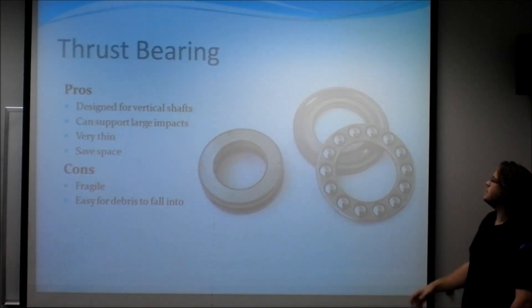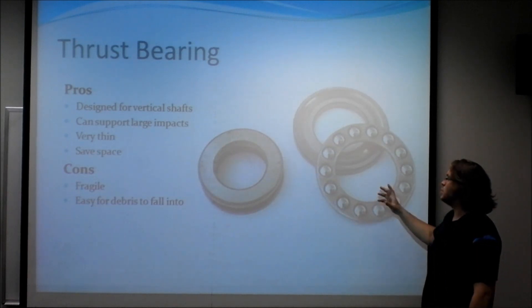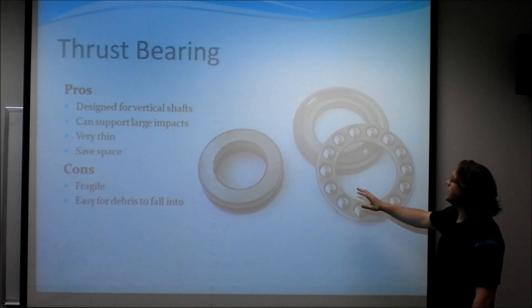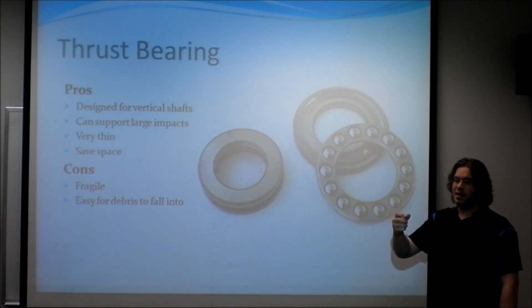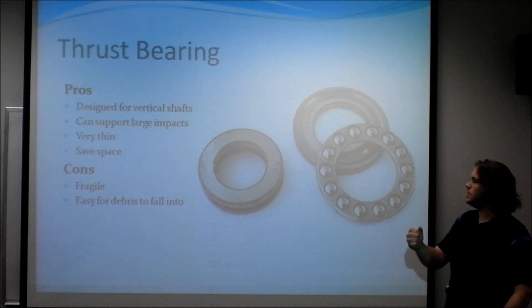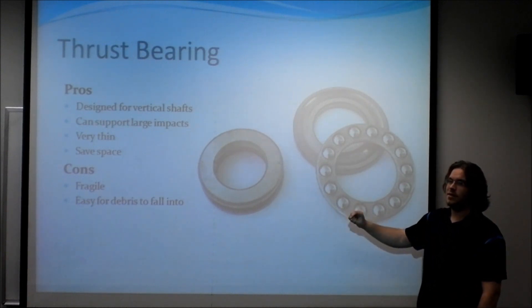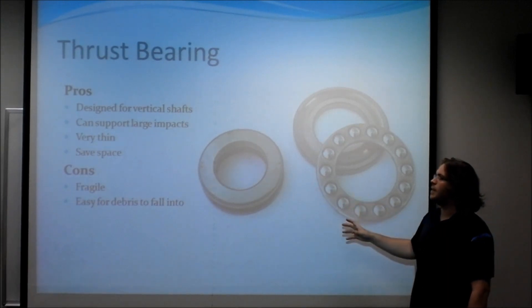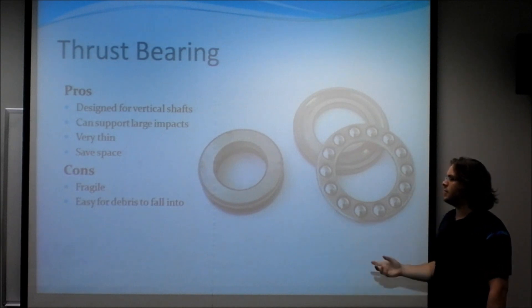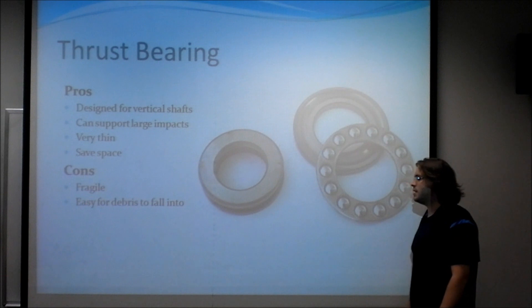Our final design isn't specifically a roller bearing for horizontal use. This is more used in vertical uses where this bearing will sit on the bottom of the base and the bearing and the axle has a flange and that rests on top of the bearing. As you can tell, these are very thin and they're designed for large impacts, large vertical impacts. The cons is that they can be very fragile and in digital design, they can easily slide in from the sides.